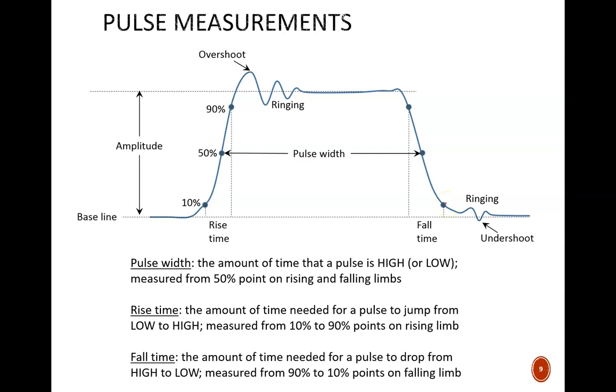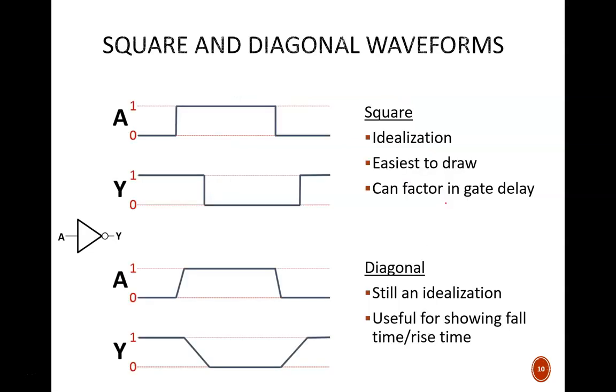This sort of realistic waveform is what you would observe with an oscilloscope, but you won't see drawings like this in textbooks or simulations. By and large, you will see square waveforms. Even though these are an idealization, they still can be used to illustrate gate delay.